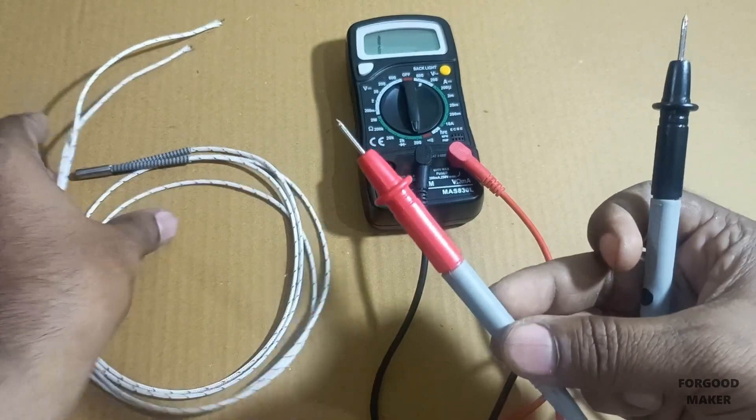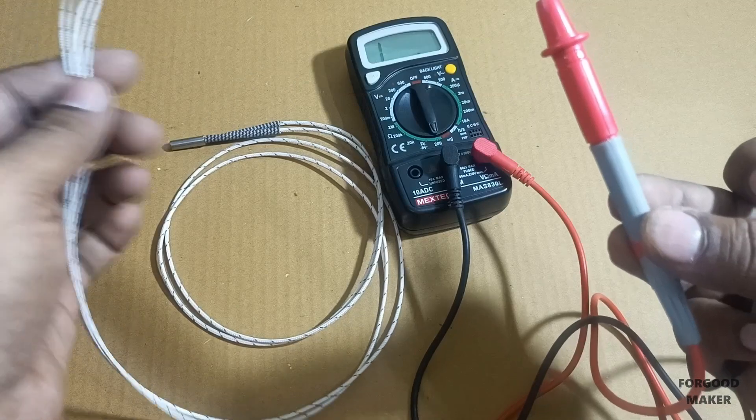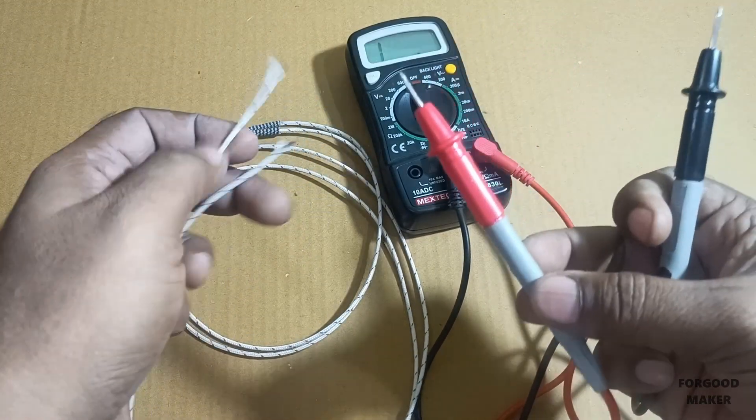Connect the cartridge terminals to multimeter probe. Polarity does not matter. You could connect to any terminal end with probe.